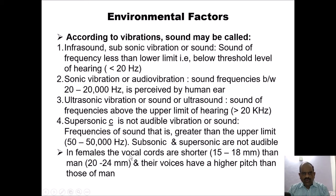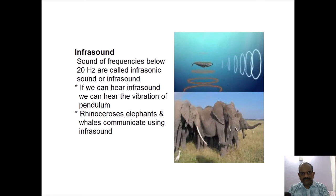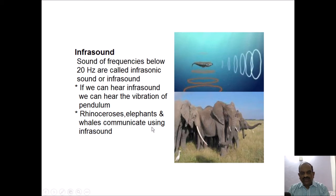In females, the vocal cords are shorter—approximately 15 to 18 mm—while in males they are 20 to 24 mm, and their voices have a higher pitch. Infrasound refers to sound of frequency below 20 Hz. If we could hear infrasound, we could hear the vibration of a pendulum. Rhinoceroses, elephants, and whales communicate using infrasound.